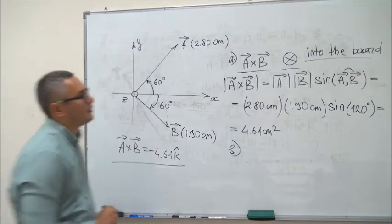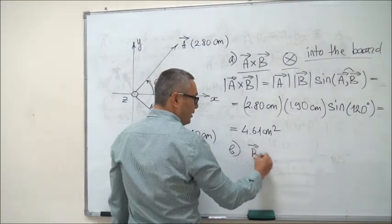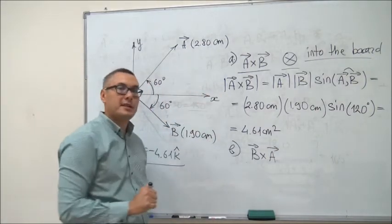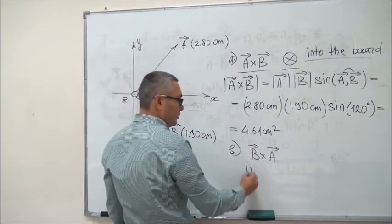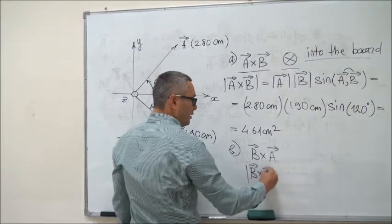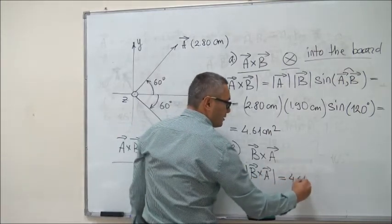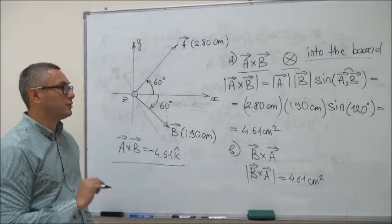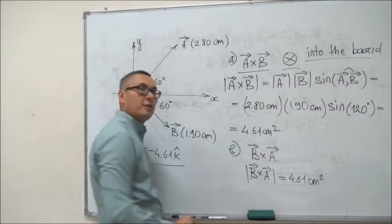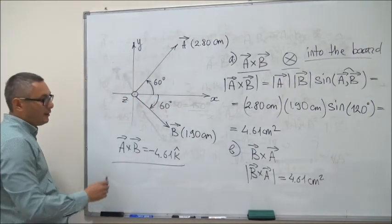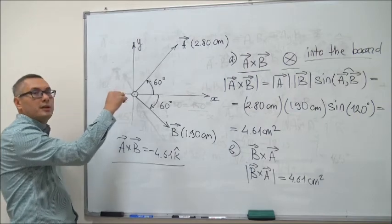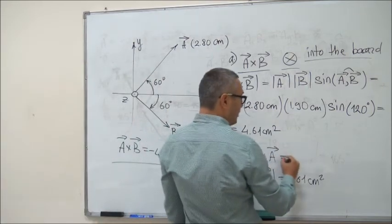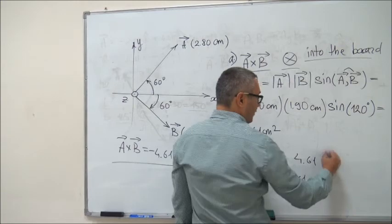Part B asks: what is the cross product of B cross A? Just from the definition, the magnitude is not going to change, so the magnitude of B cross A is exactly the same — 4.61 cm². However, we've changed the order of the vectors, which means that if A cross B was pointing into the board, then B cross A will be pointing out of the board. So B cross A equals positive 4.61 K̂, without the minus sign.